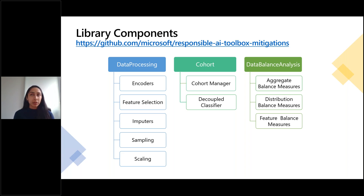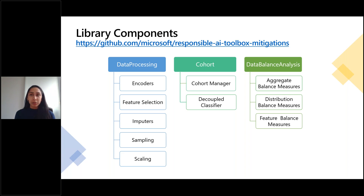These are often wrapped from existing libraries but brought together to include the cohort element. The cohort module has two pieces: a cohort manager providing classes for creating and managing cohorts with an easy and intuitive interface, and a model module providing techniques for learning decoupled estimators or classifiers for different cohorts to combine weaker cohorts in a way that optimizes fairness. The data balance analysis module provides metrics for diagnosing errors from data imbalance on class labels or feature values.